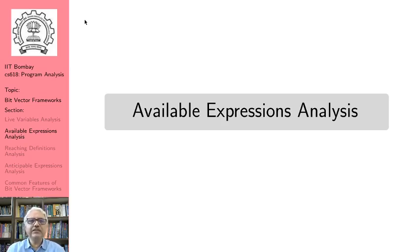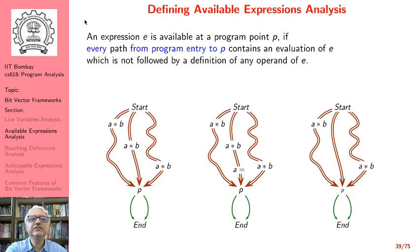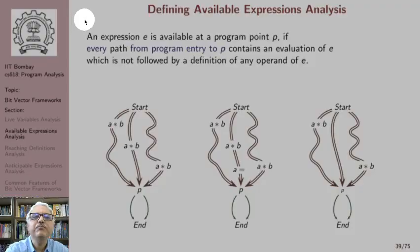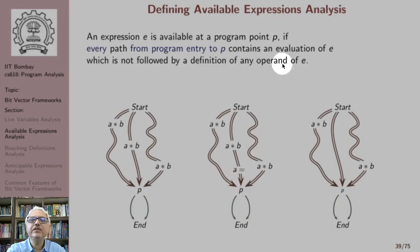In this second lecture, we want to talk about a different kind of data flow analysis — a bit vector data flow framework in which we perform analysis for expressions, called available expressions analysis. We are trying to find out if at a given program point, previously computed values of expressions can be reused along every path instead of re-computing the expression again. An expression is said to be available at a program point if every path from program entry to point p contains an evaluation of the expression e which is not followed by a definition of any operands of e.